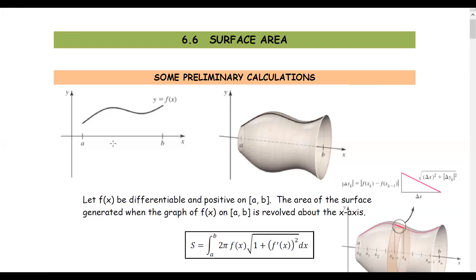Section 6.6: Surface Area. This section will look at the area of the surface generated when the graph of a function from point A to point B revolves about a given axis of revolution. We take the graph of y equals f(x) from point A to point B rotating about the x-axis, which forms a solid of revolution. We are going to find the surface area of this solid.